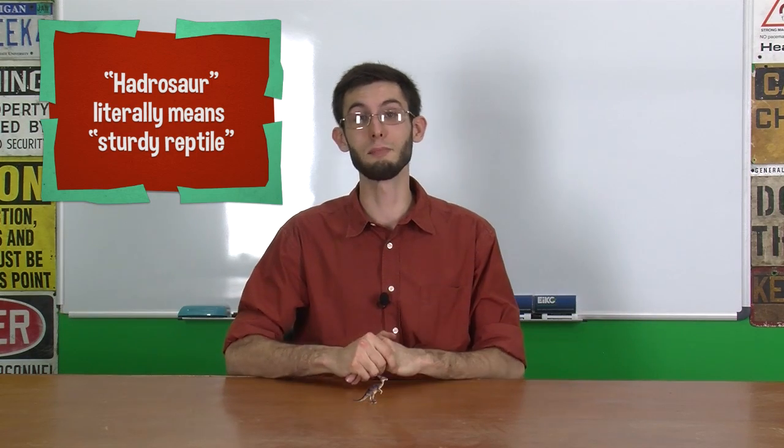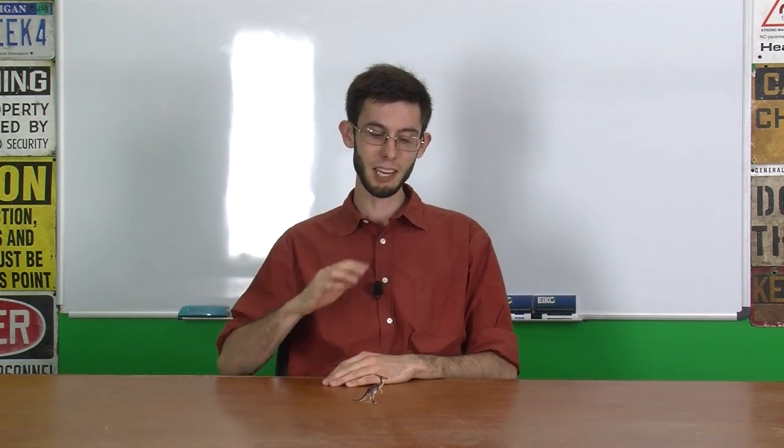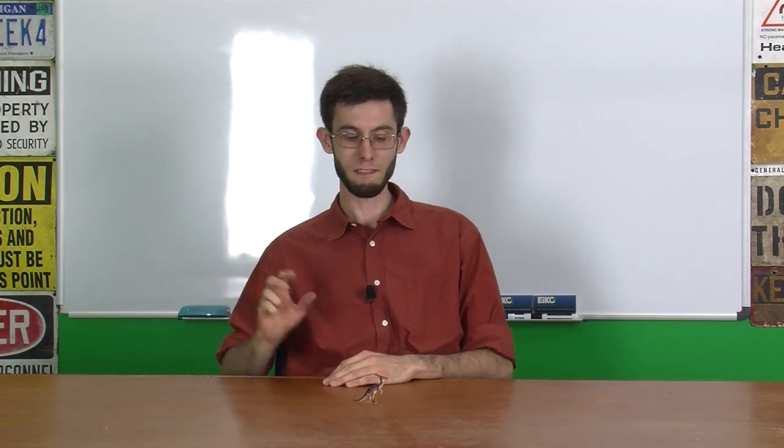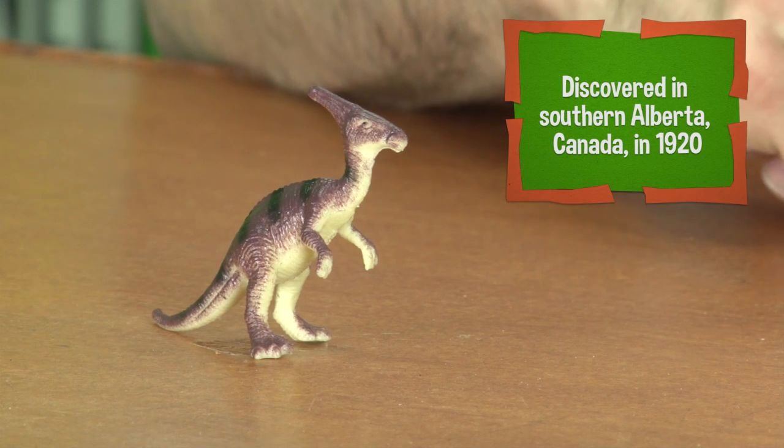On the subject of paleontological names not making sense, it's called Parasaurolophus or Parasaurolophus. It means near-saurolophus. When they found it, they saw this crest on its head and they decided, oh, this must be closely related to Saurolophus, which is another Hadrosaur.